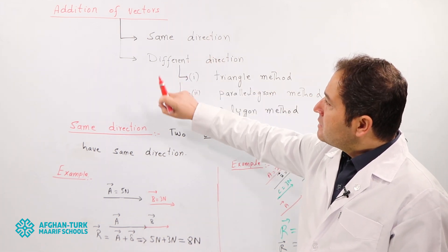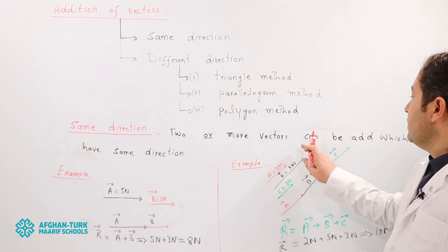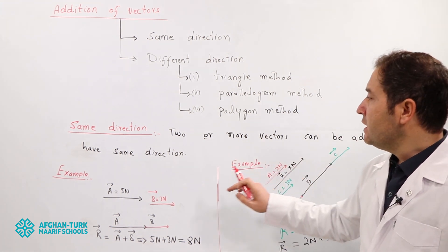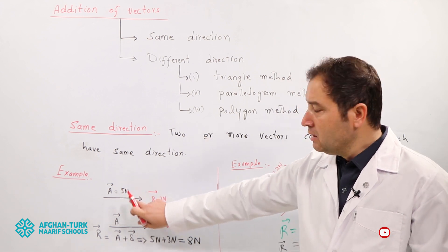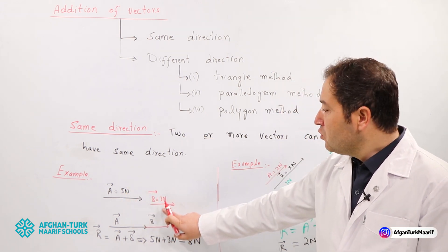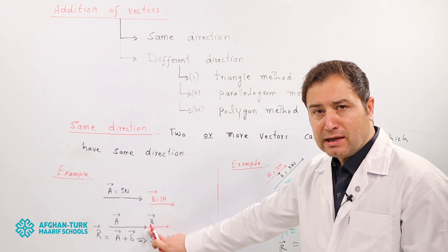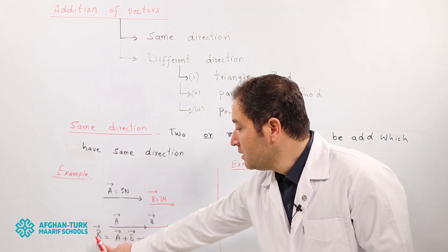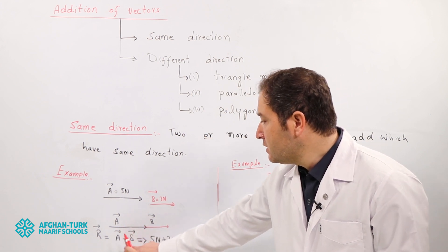First we discuss the same direction. If we have two or more vectors with the same direction, they can be added. We add these two vectors by joining the head of the first vector to the tail of the second vector. When we combine these two vectors, the final vector is called the resultant vector — it is the combination of vector A and vector B.